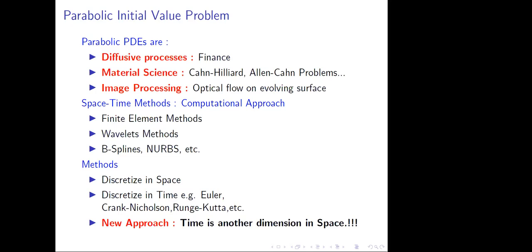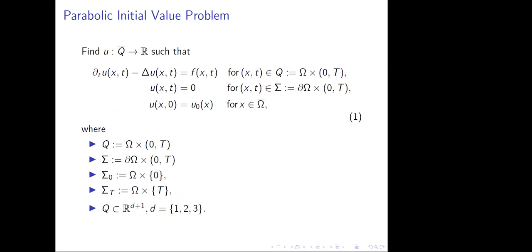What I'm going to talk about is a new approach to Spacetime methods, where we consider time as another dimension in space. So time is treated as a fourth dimension when you are in three spatial dimensions, or as a second dimension when you are in one spatial dimension. In this sense, computations always go in dimension plus one. A classical parabolic initial boundary value problem is posed in this way, giving a full Spacetime cylinder with time evolution boundaries and initial and final time boundaries.